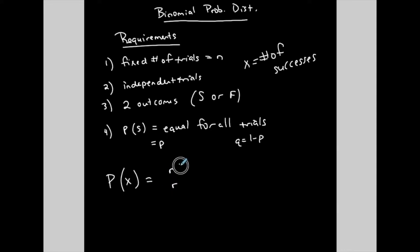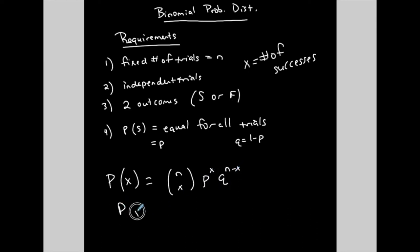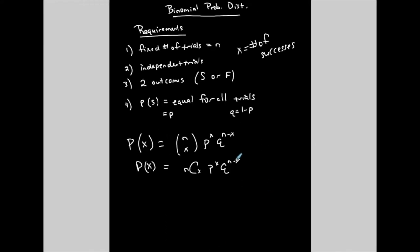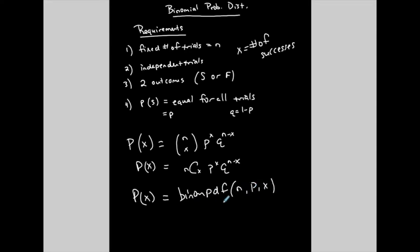The formula is nCx times p to the x times q to the n minus x — this is just a combinations formula. On your calculator, the shortcut is binompdf, and the order in which you input values is n, p, x. I'll show both the formula method and the calculator method. Binompdf is found by pressing second then vars on a TI-83 or TI-84.